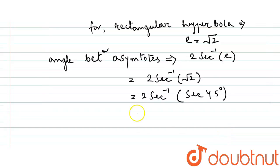So this will be 2 into 45 degrees. Sec inverse of root 2 will be 45 degrees, so ultimately it will give 90 degrees. So the angle of asymptotes of this hyperbola is 90 degrees. Let me quickly go back to the options.